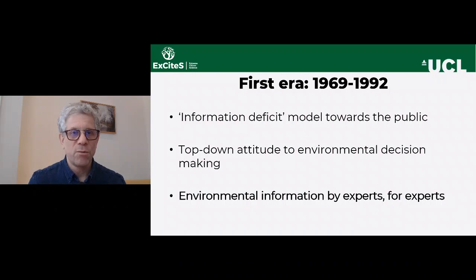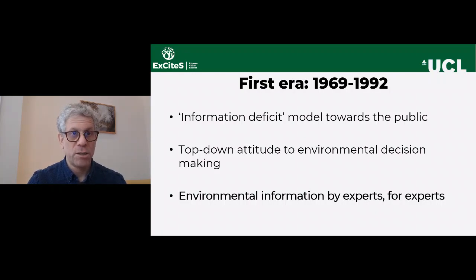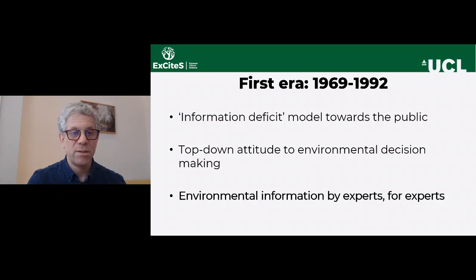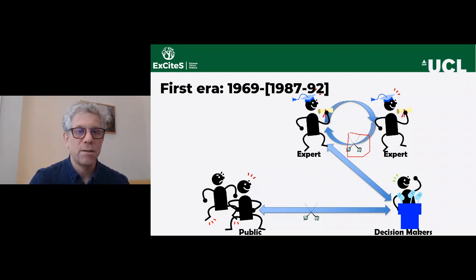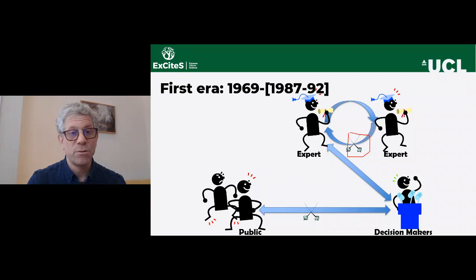To summarize this first era of information: there is what's called the information deficit model toward the public — the idea that if we tell people what we know about the environment, they will change their actions. There is a top-down attitude to environmental decision-making. Environmental information in this period is produced by experts in order to be used by experts. The experts discuss among themselves and with decision-makers, but if the public has an issue, they should talk to the decision-maker — the experts are out of the equation in that case.